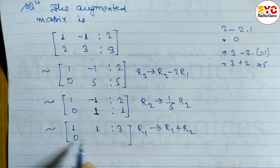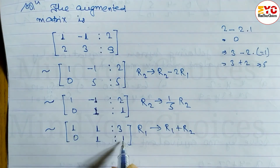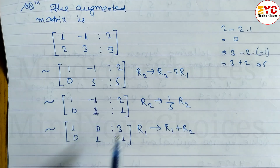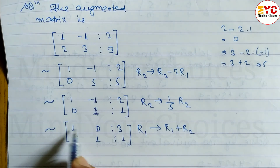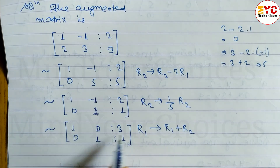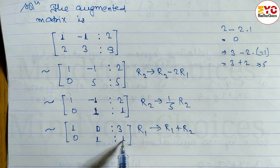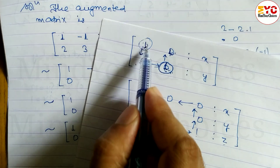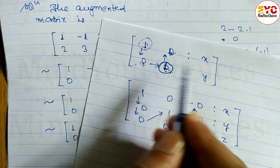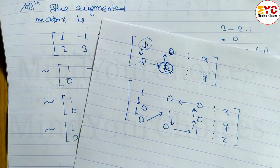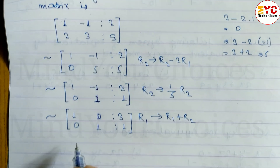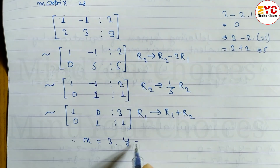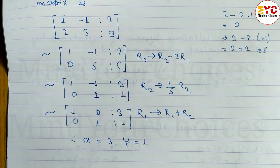The second row stays the same: 0, 1 | 1. We now have the identity matrix [1, 0 | 3] and [0, 1 | 1]. Therefore, x is equal to 3 and y is equal to 1. That is the answer.